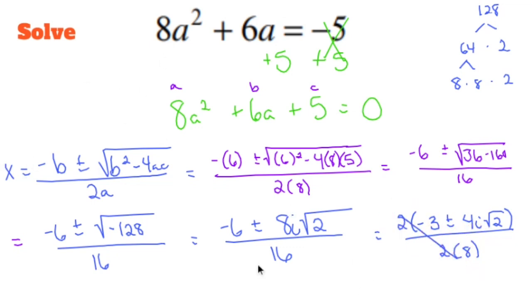And I can finally say, let's not use x, it's a. I can finally say a equals negative 3 plus or minus 4i root 2 all over 8. Now that's pretty much it. I can be done if I want to be.